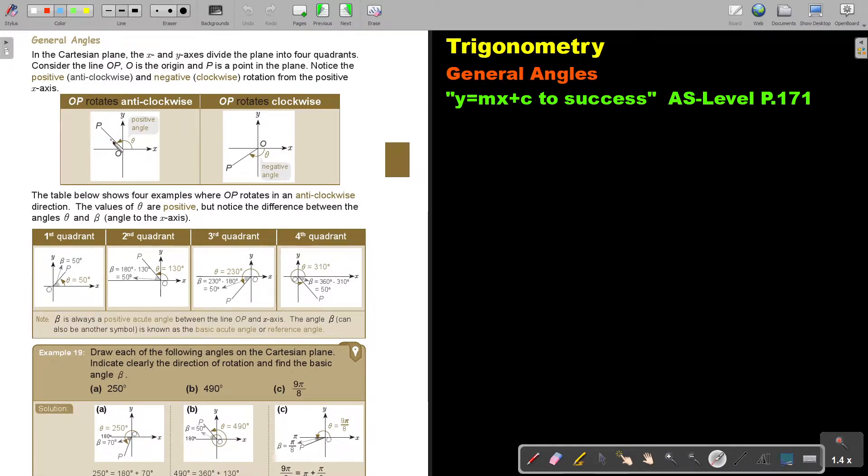So if you go around like this, it's positive, and if you go around like this, it's a negative angle. The table below shows four examples where OP rotates in an anti-clockwise direction. The values of theta are positive, but notice the difference between the angle theta and beta. Beta is the angle to the X axis.